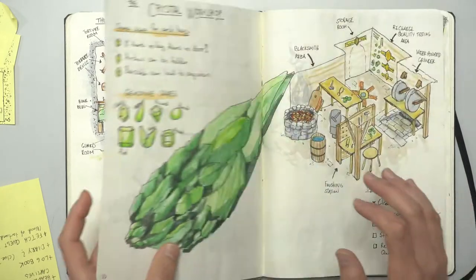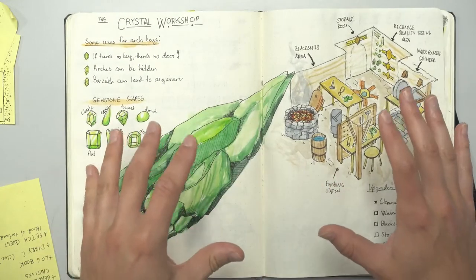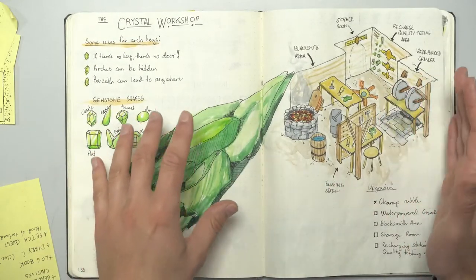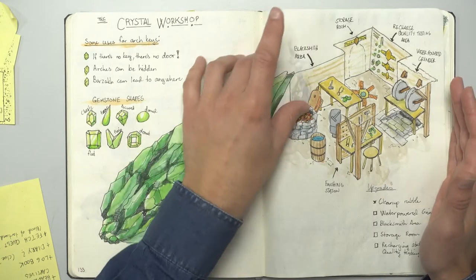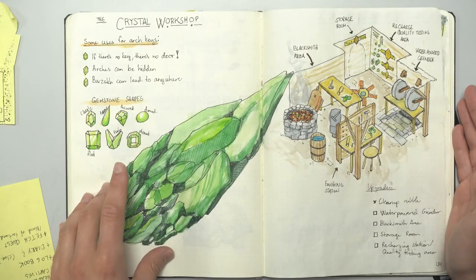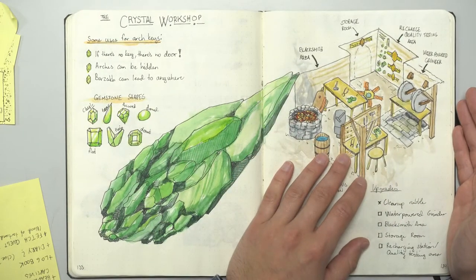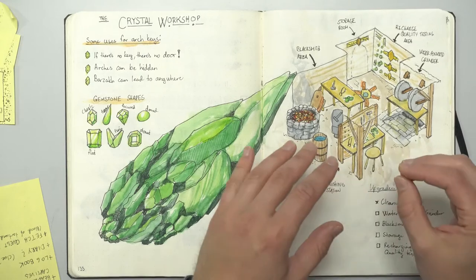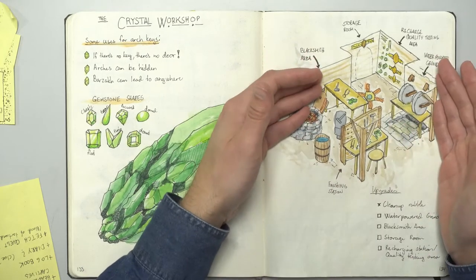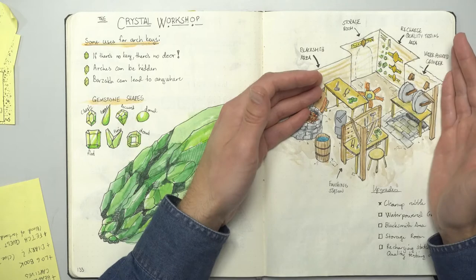Speaking of portal technology, we have the crystal workshop. It's a workshop that makes arch keys and other portal contraptions out of these crystals. The crystal workshop doesn't look like this, however, but is a pile of rubble the players can build up to make it look like this. And they can make portal stuff on their own.